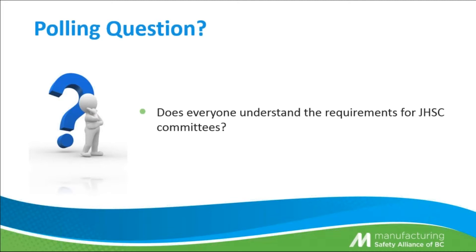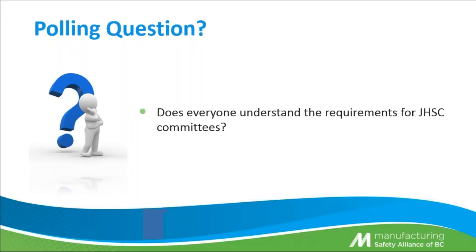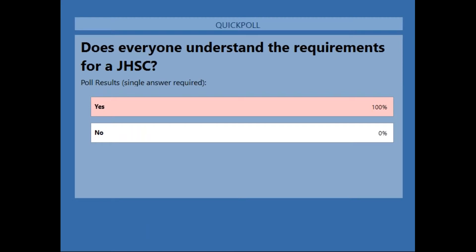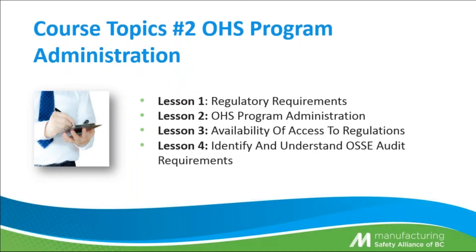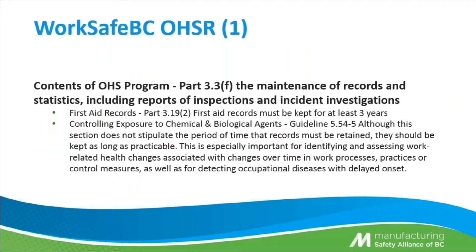Does everyone understand the requirements for our Joint Health and Safety Committee? Our next topic is the Occupational Health and Safety Program Administration. We've got four sections: regulatory requirements, program administration, availability of access to regulations, and the OC audit requirements. Under this section, we only have the Occupational Health and Safety Regulations to worry about, and they talk about the contents of the program. There are multiple safety regulations for the types of documentation that your program has to mention.